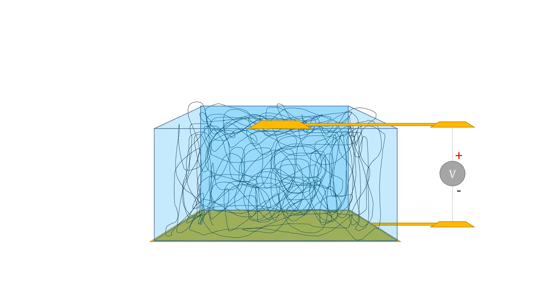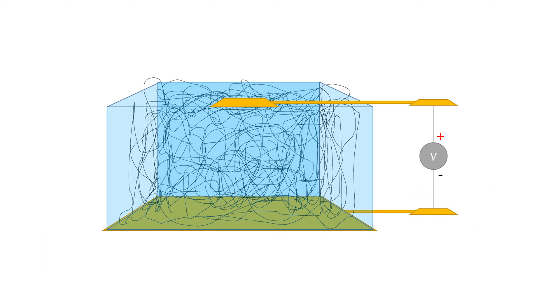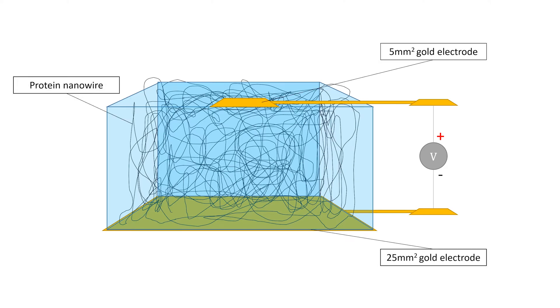The makeup of the device is surprisingly simple and only comprised of three parts. Essentially, a mesh of protein nanowires are attached to a 25 square millimeter gold electrode. The nanowire mesh is then covered by a smaller 5 square millimeter gold electrode. Of course, the smaller electrode on top ensures that the nanofilm is not covered.